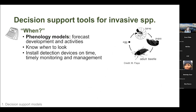Decision support tools are essential for preventing and managing the invasion of non-native species. One really important type are phenology modeling tools. A phenology model addresses the question of when to expect a specific life stage of a pest. This cartoon shows a generic life cycle of a beetle species: adults lay eggs, eggs hatch into larvae, then pupation occurs, and the life cycle starts over again.